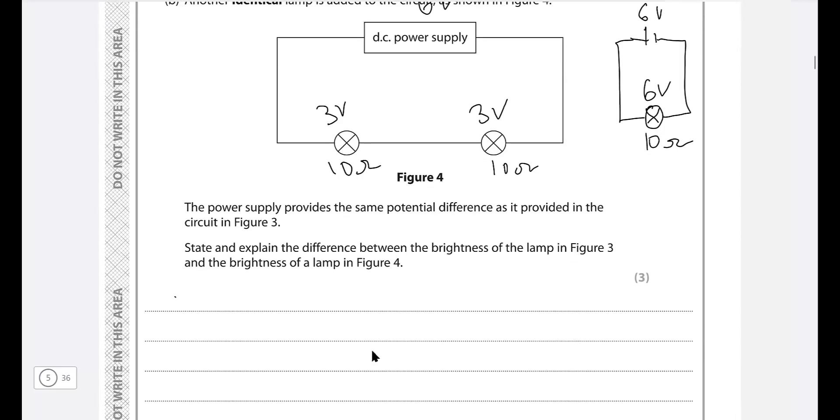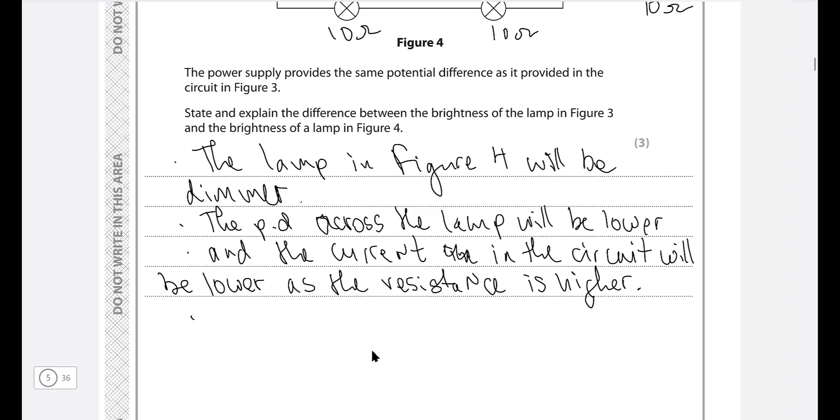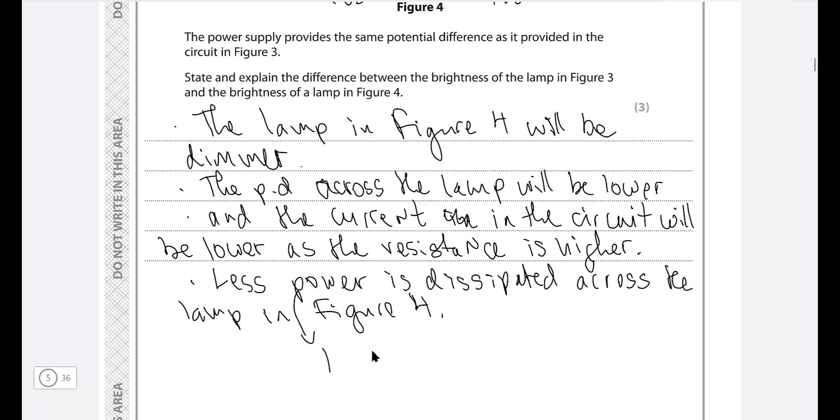Now let's just write it up. The first thing to note is that the lamp in figure four will be dimmer. Why is that? Well, the potential difference across the lamp will be lower, and the current in the circuit will also be lower because the resistance is higher. Overall, those two things mean that less power is dissipated across each filament lamp. Because power is VI and if the current is lower, if the voltage is lower, then the power will be lower as well.